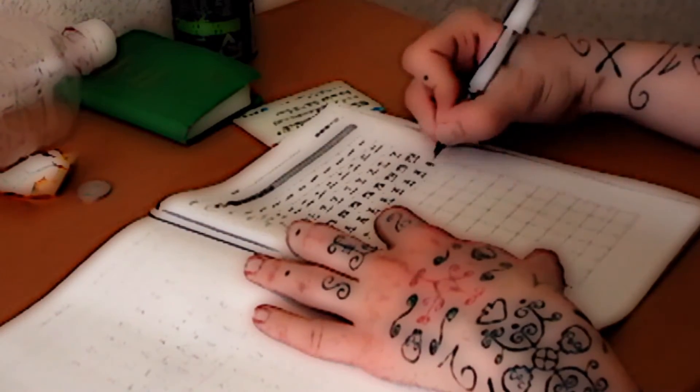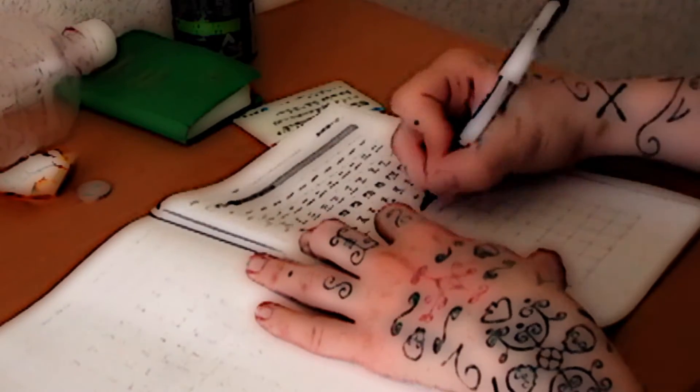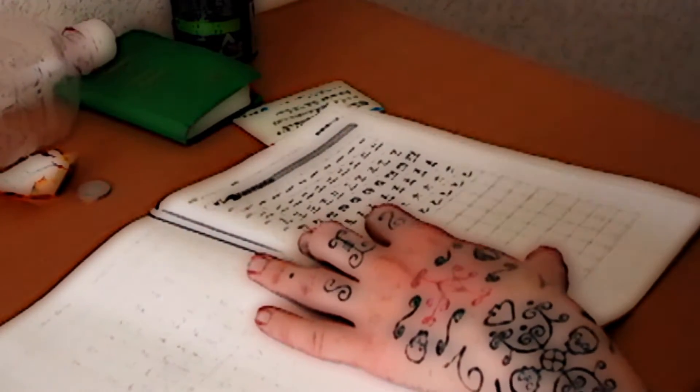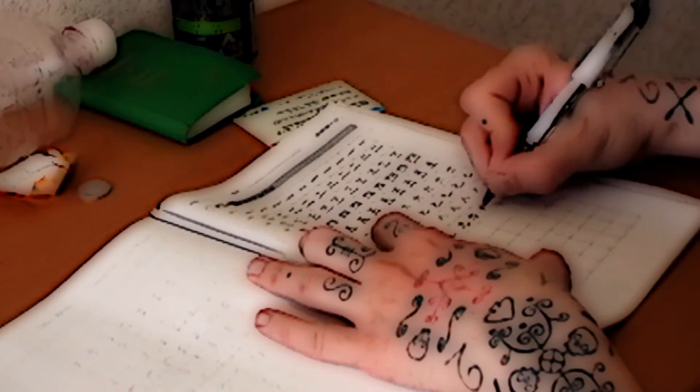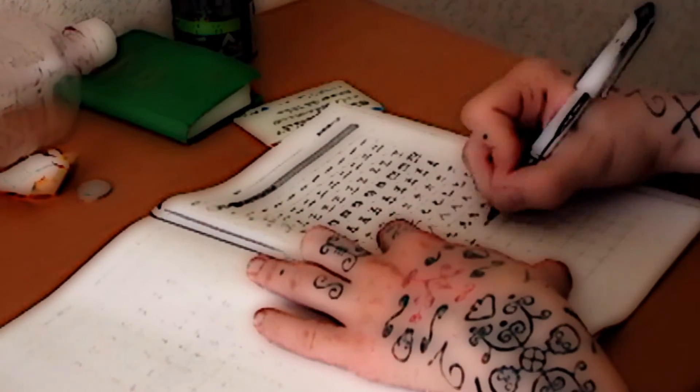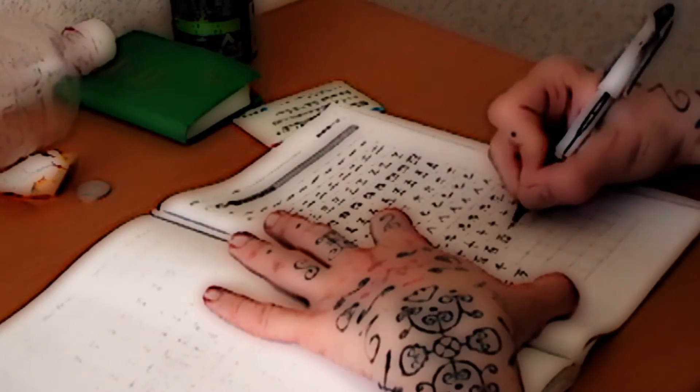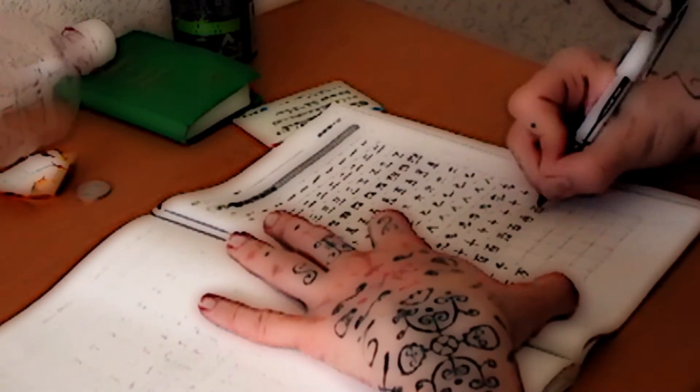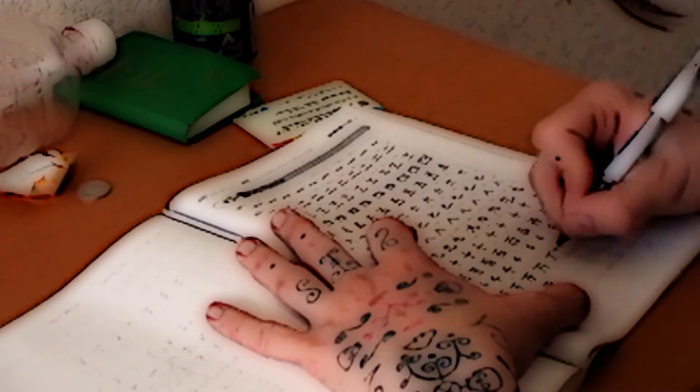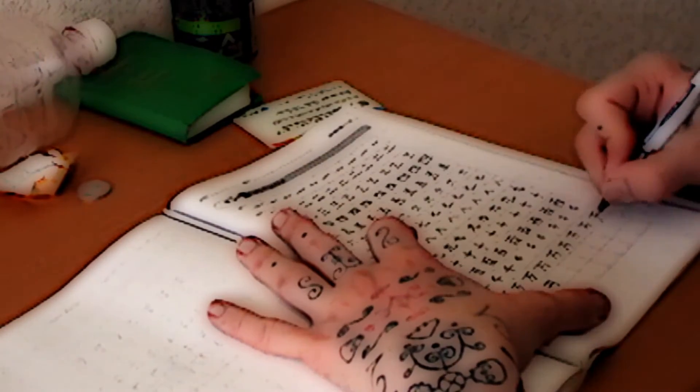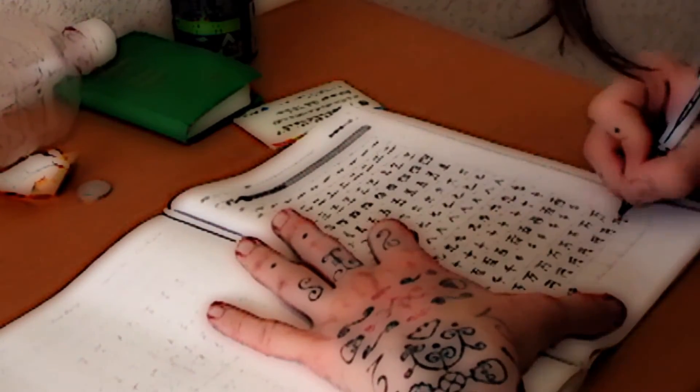So do yourself a favor before you get here and really master hiragana and katakana alphabets to the point where you can sight-read them. And by sight-reading, I mean read them instantaneously when you look at them on paper, much like you do with whatever alphabet is used in your native language. You'll be doing yourself a really huge favor since that's the bulk of the first month and a half of the Japanese courses for beginners at Temple University.